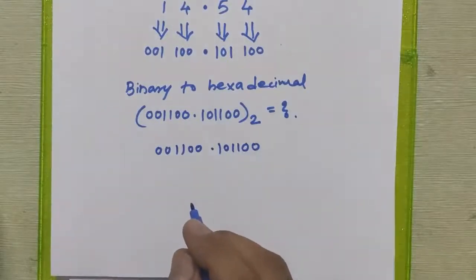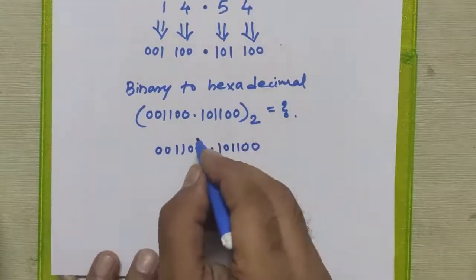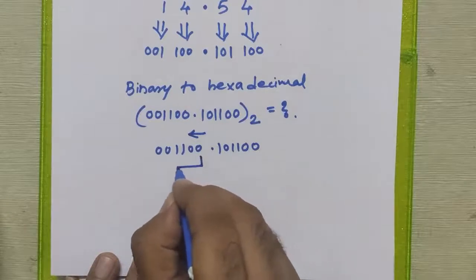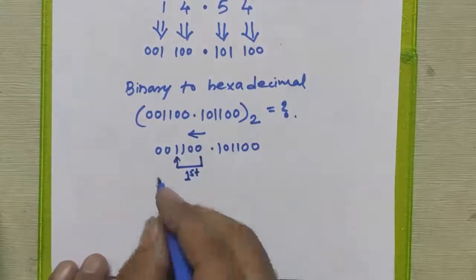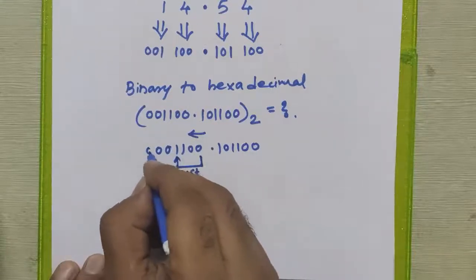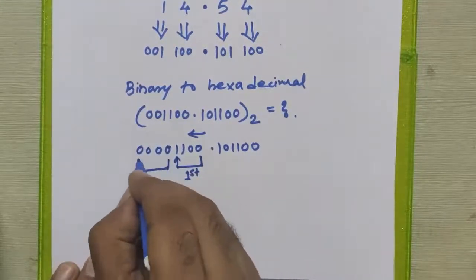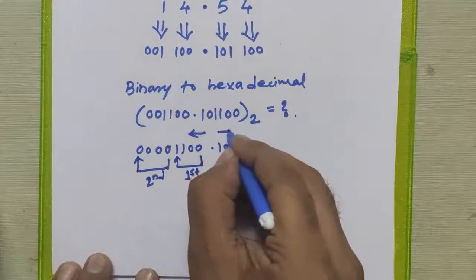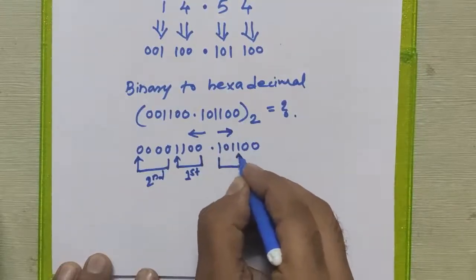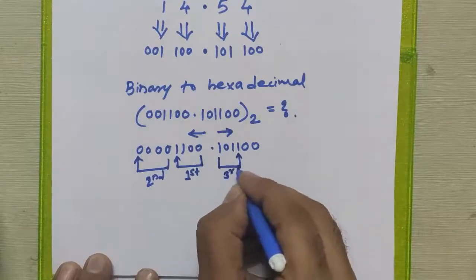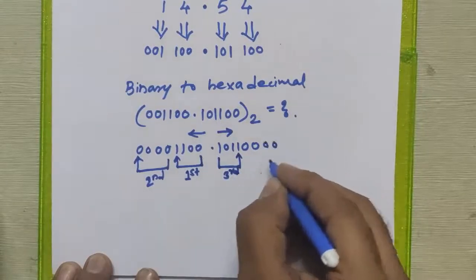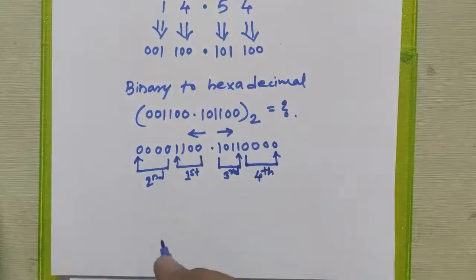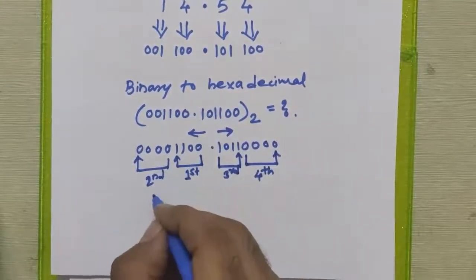For the integral part, we go from right to left to form groups of four bits. The first group is 1100; the remaining two bits are 00, so we pad two zeros to get 0011 as the second group. For the fractional part, we go from left to right: the first fractional group is 1011. We add two zeros to form the next group: 0000. So we have four groups in total.